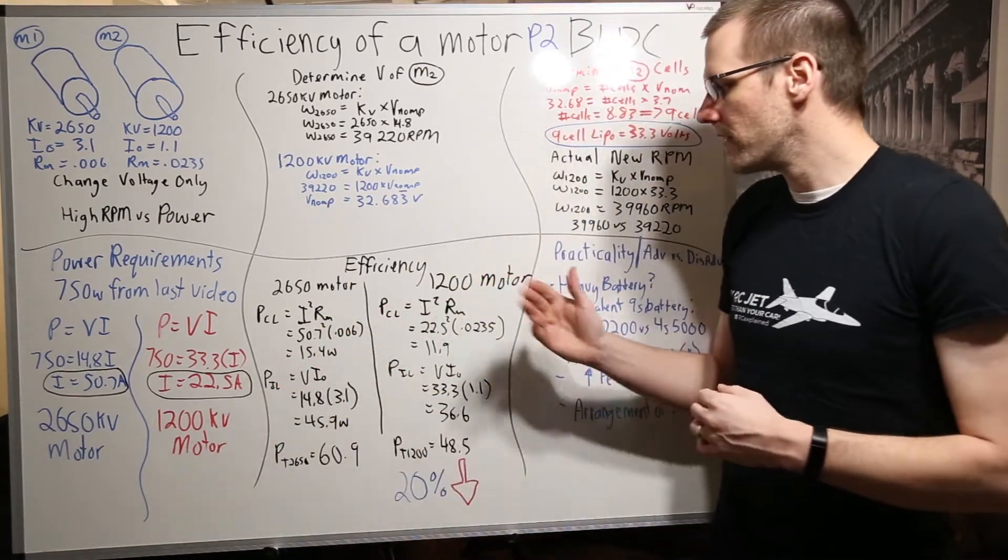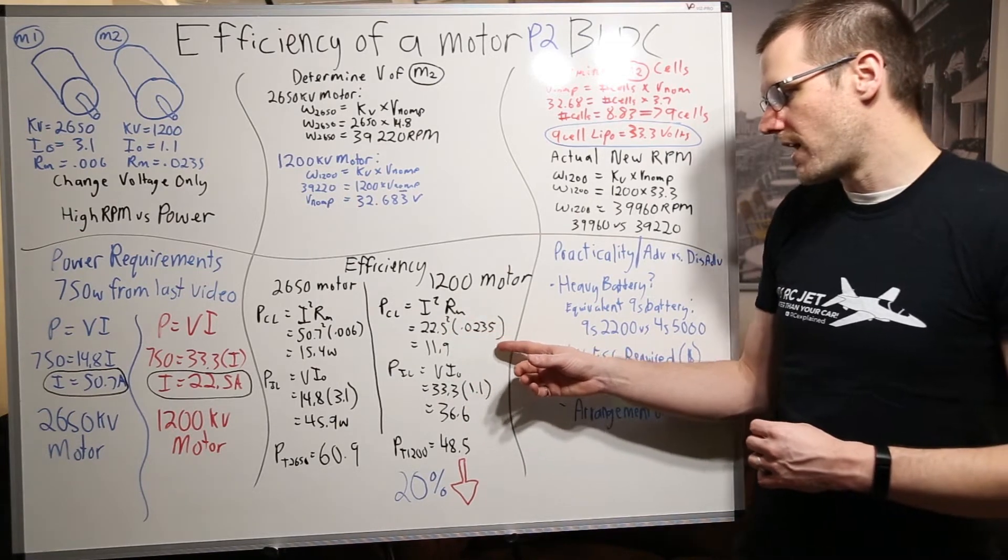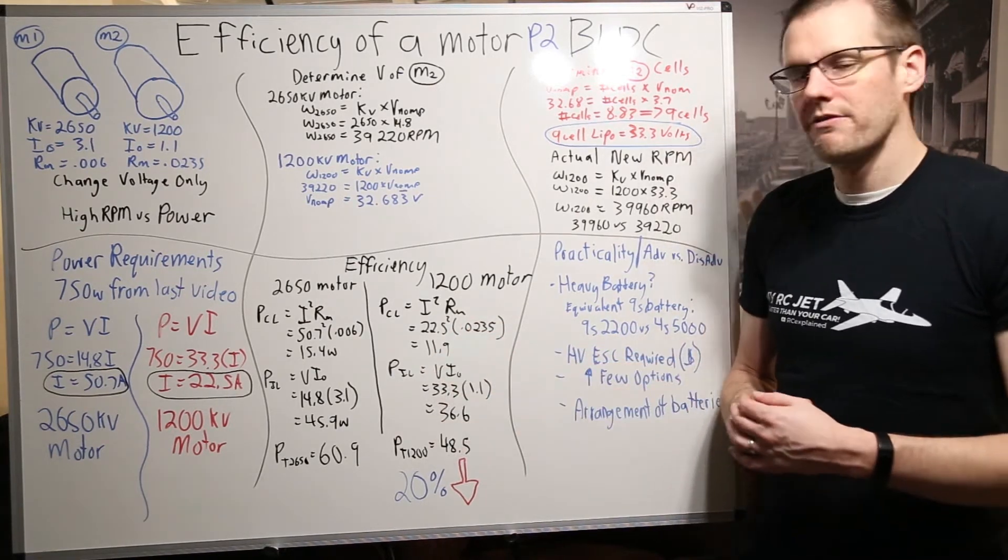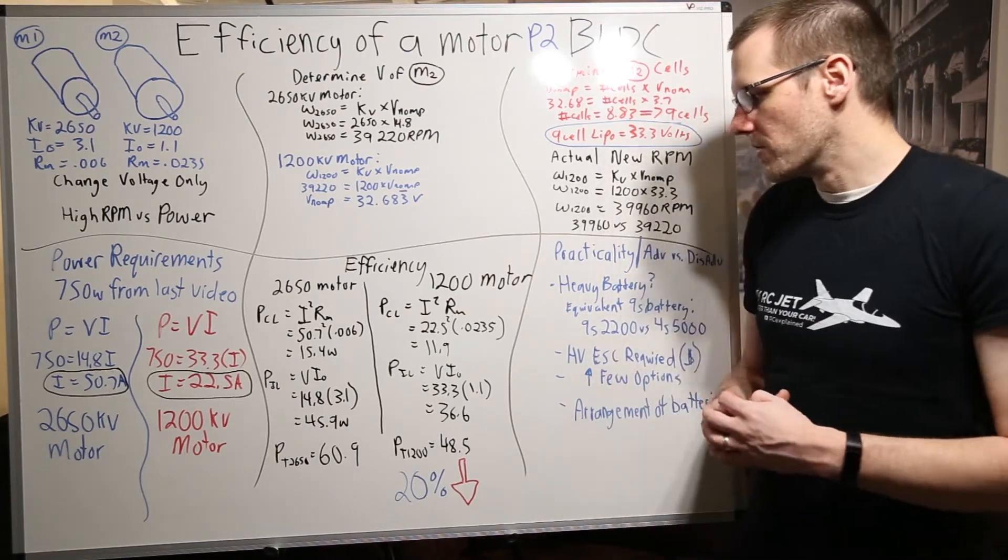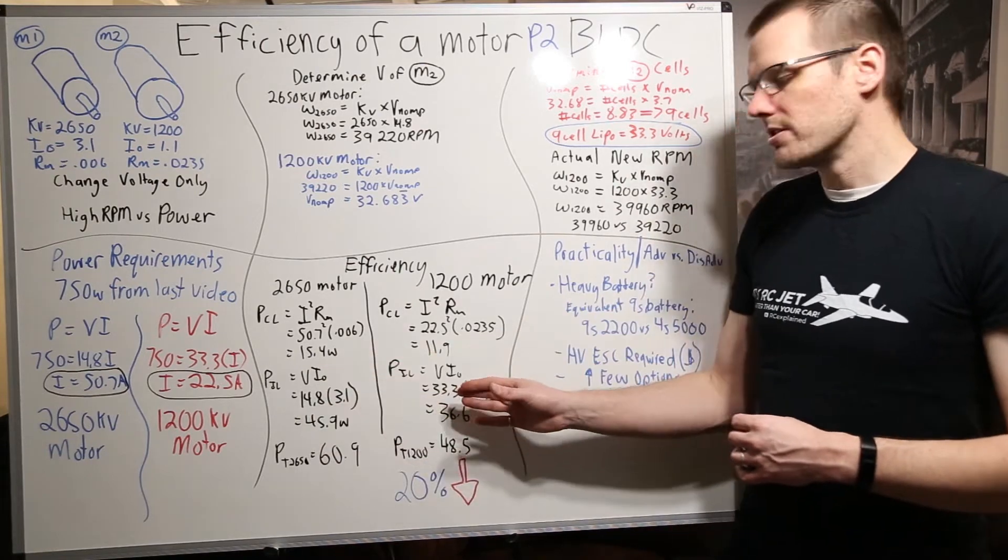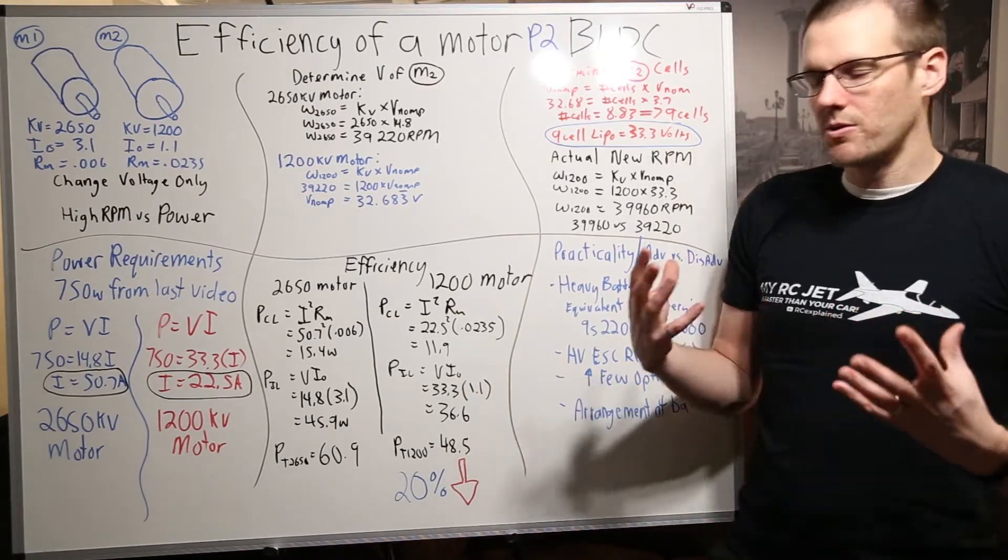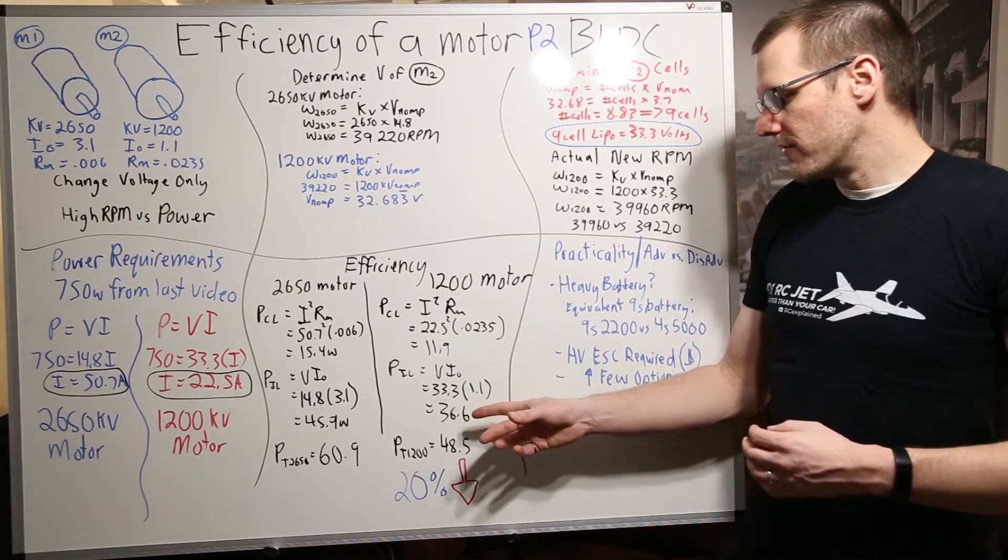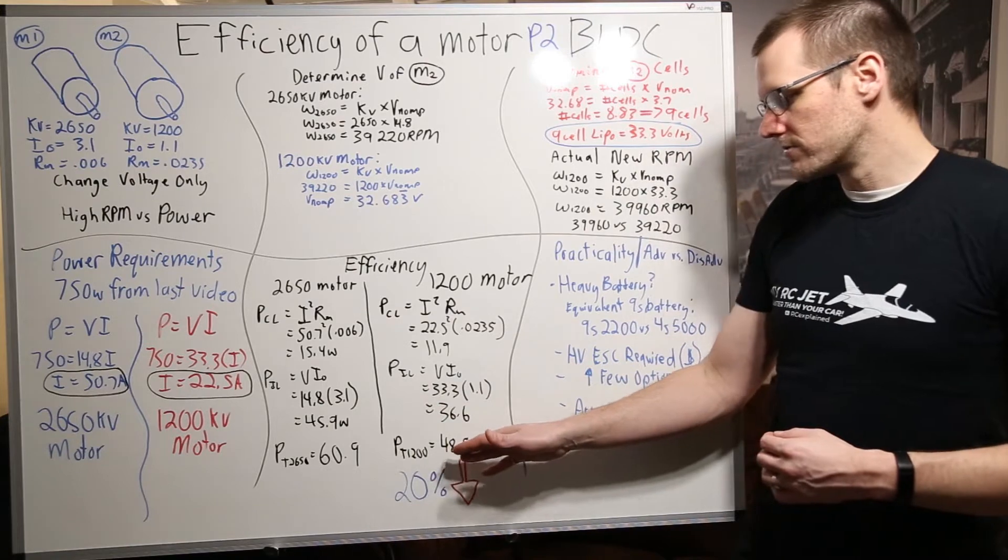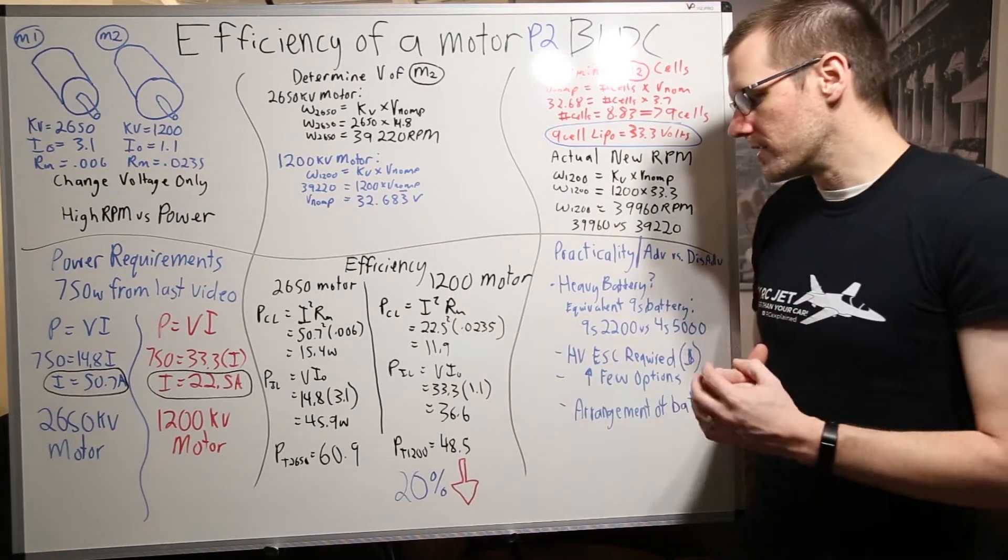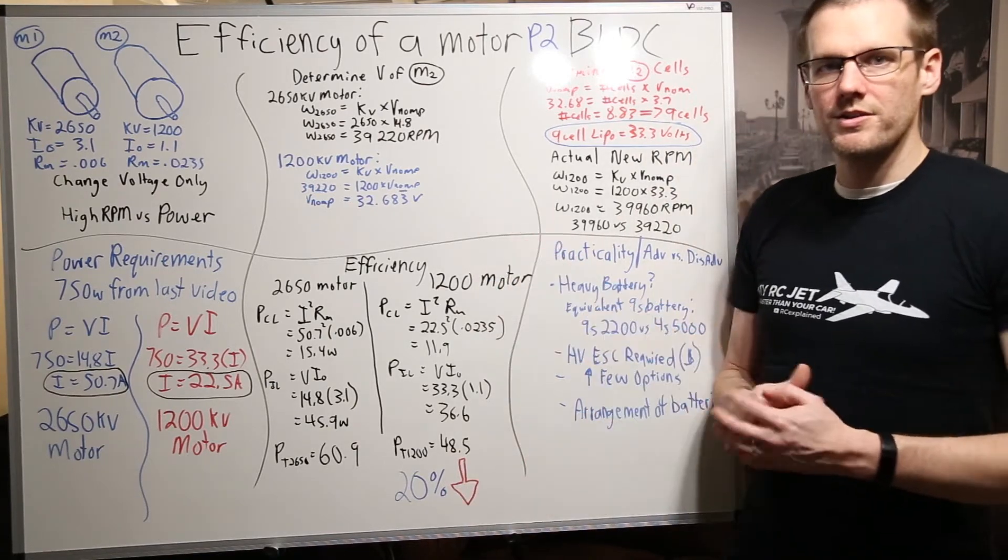Now we do the exact same thing for our 1200 kV motor. We get 22.5 squared multiplied by .0235. We get 11.9 watts of power that's going to be wasted by the windings within the brushless motor. We do the same thing for iron losses that we did over here. We multiply 33.3 which is the voltage we feed the motor by the 1.1 amps and we get a total output of 36.6 watts lost. We then do the summation of those two values that equals roughly 48.5 and we do notice that we get a 20 percent decrease with our 1200 kV motor.